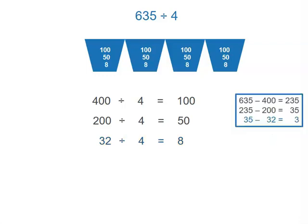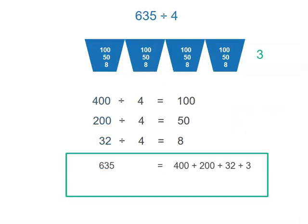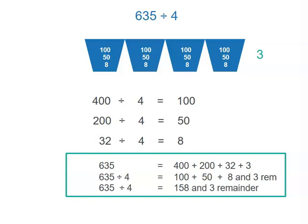Each bucket has 100 plus 50 plus 8. We just shared 32 of the 35, so we've got 3 left over that we can't share among 4 buckets. Our number 635 was made up of chunks: 400 plus 200 plus 32. Each chunk was shared among 4, then we had our 3 remainder. We broke our number into smaller parts, and when we divided by 4, we got 100 plus 50 plus 8 plus our 3 remainder. So 635 divided by 4 equals 158 with 3 remainder.